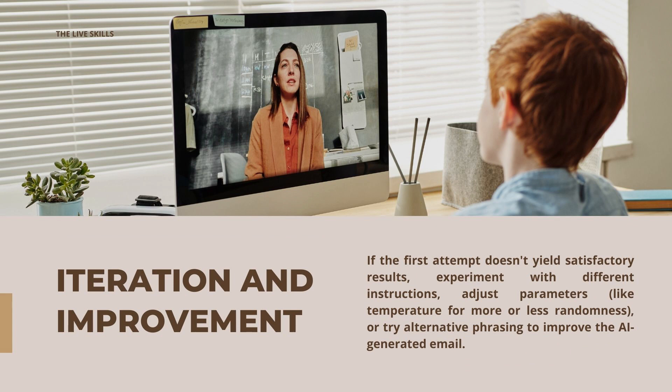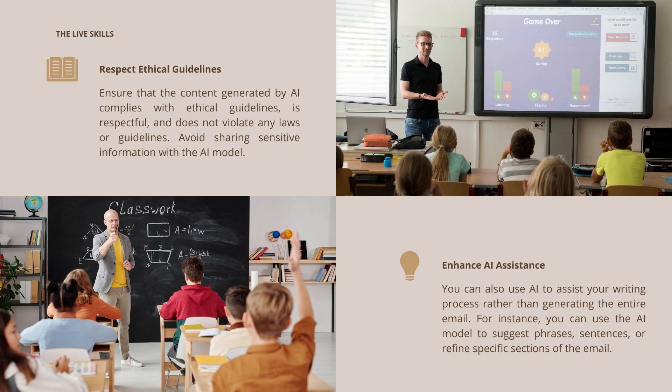Step 8: Iteration and improvement. If the first attempt doesn't yield satisfactory results, experiment with different instructions. Adjust parameters like temperature for more or less randomness, or try alternative phrasing to improve the AI-generated email.